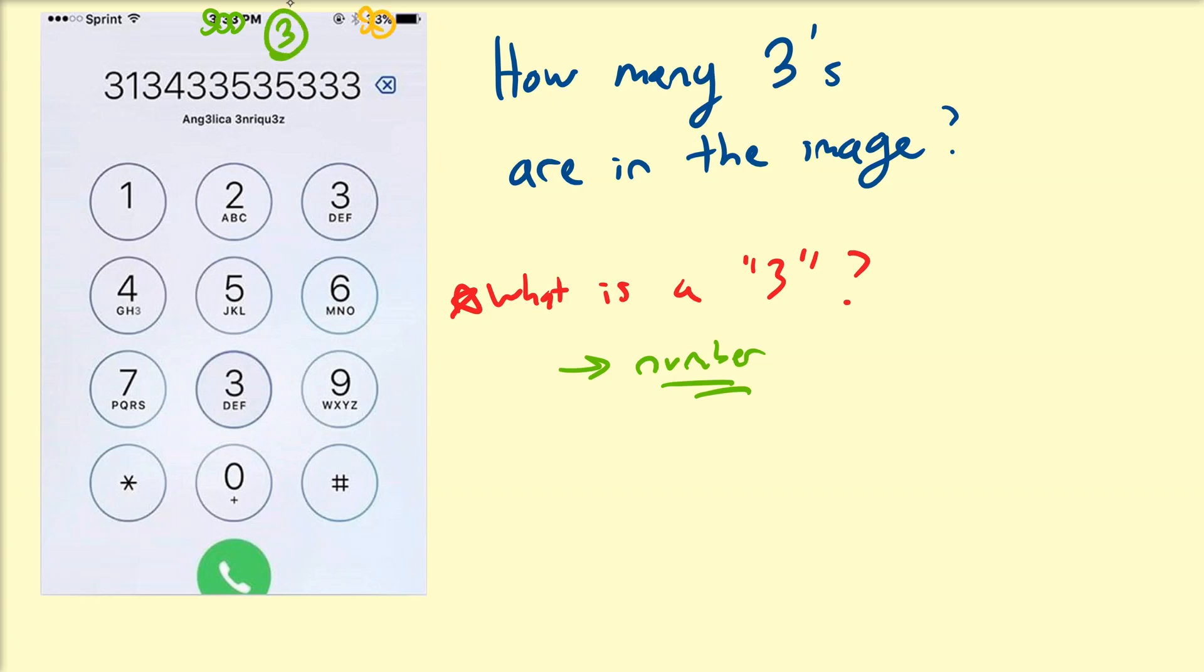There's two located in this percentage. Let's look at the actual phone number, so we have one, two, three, four, five, six, seven, eight - so eight there. Underneath that, there's some threes in the actual name for Angelica Enriquez, so we have one, two, and three there.